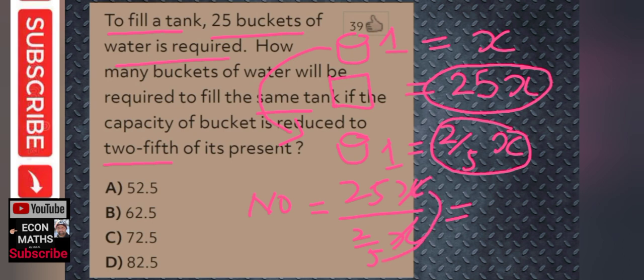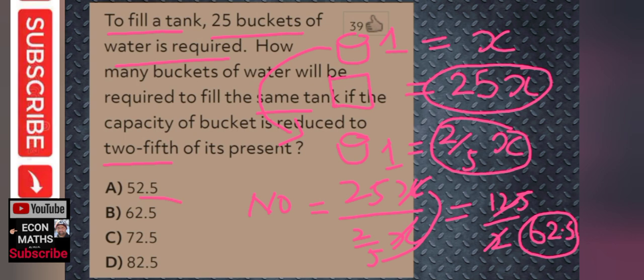The x cancels out, and 5 comes to the numerator. So we get 25 times 5 equals 125, divided by 2, which comes out to be 62.5. So the number of buckets required to completely fill the tank when the bucket size is reduced to two-fifths of its present volume is 62.5.